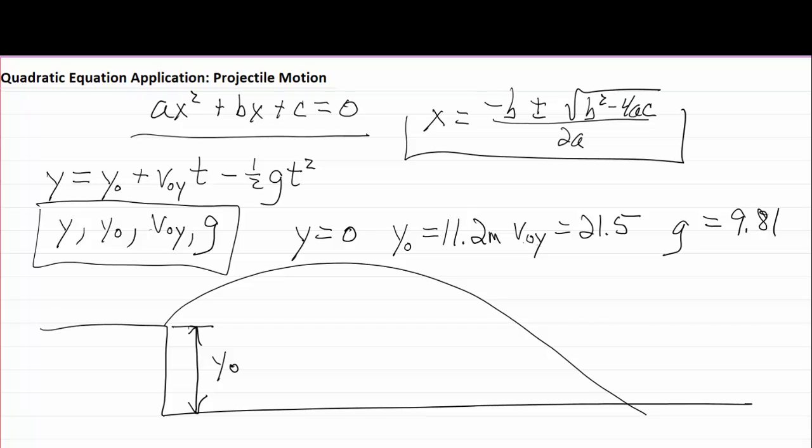The v with a subscript of 0y on there would represent the initial speed in the y direction, and this would actually be in meters per second. A person could throw a rock or a baseball at that speed with an initial speed in the y direction.